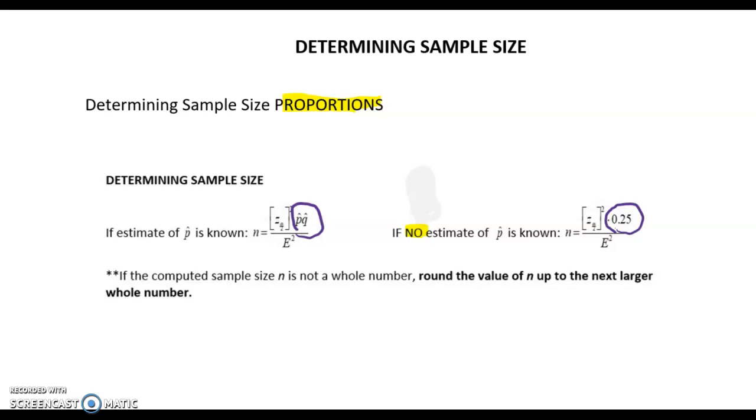Now, in the example that we're looking at, we do not have an estimate of P hat. So we will be using the formula that says N equals critical value squared times 0.25 over E squared.